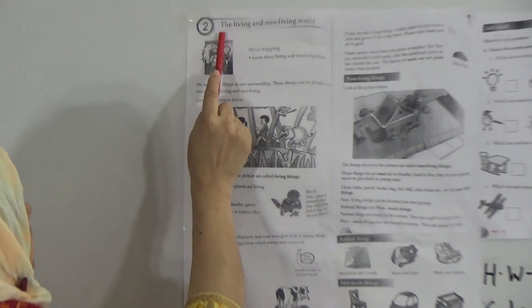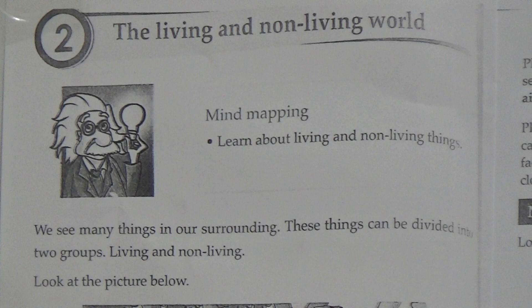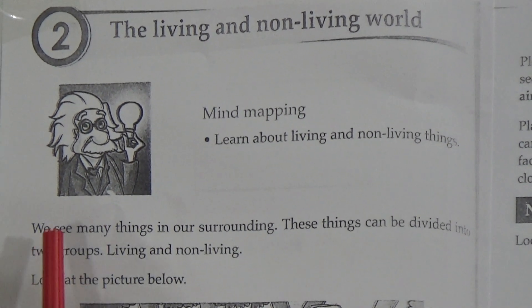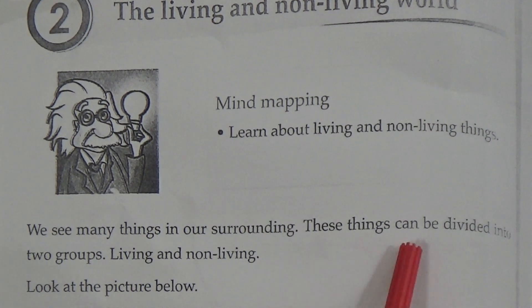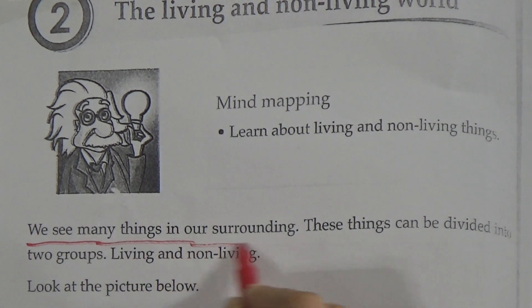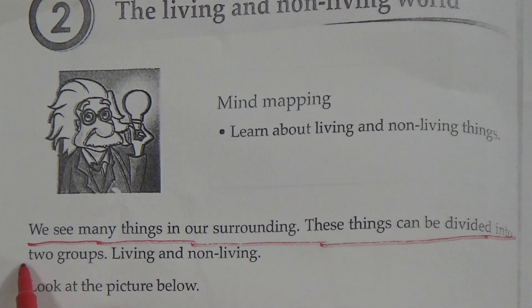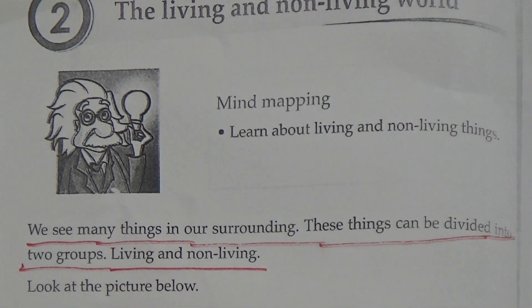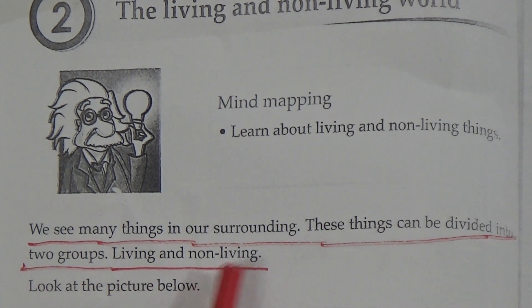Our today's topic is Chapter 2. The chapter name is 'The Living and Non-Living World.' We see many things in our surrounding. These things can be divided into two groups — this is a very important line, so underline it and memorize it. We see many things in our surrounding and these things can be divided into two groups: living and non-living things.